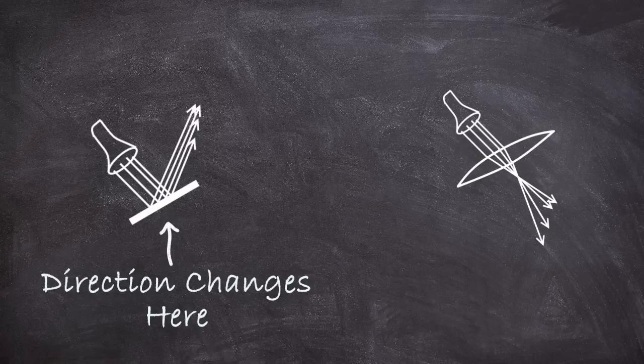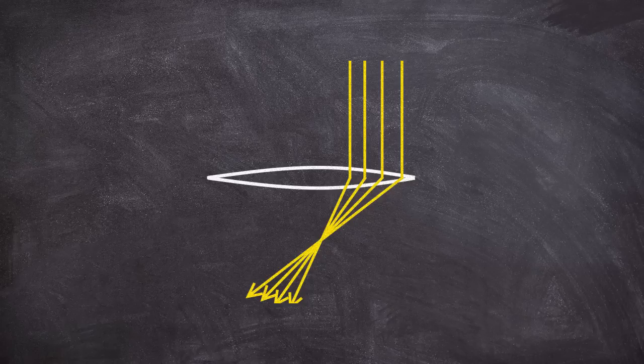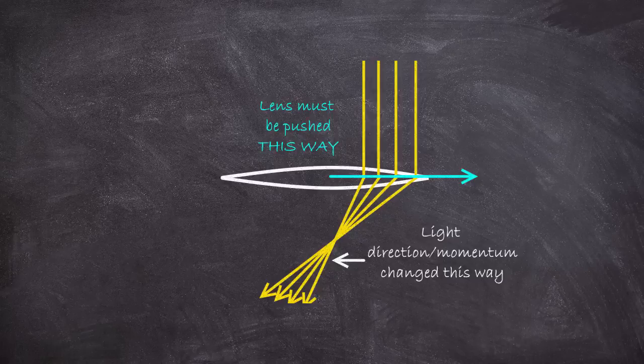If I shine light through a lens, its path is bent. To be concrete, let's say I have a lens and I only shine light through the rightmost part of it. All this light is then bent to the left. That means the light has to push the lens to the right. This lens is literally pushed to the right by bending light to the left.